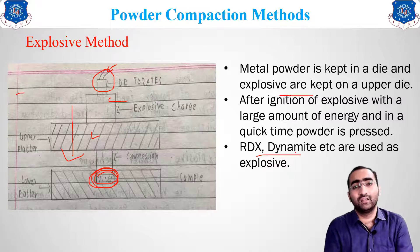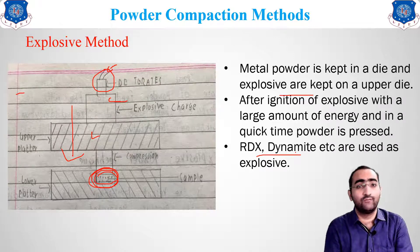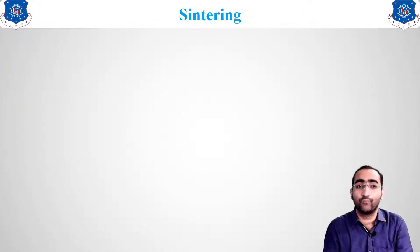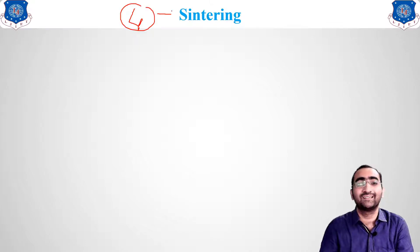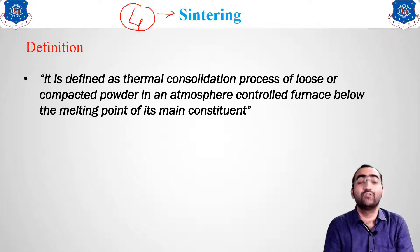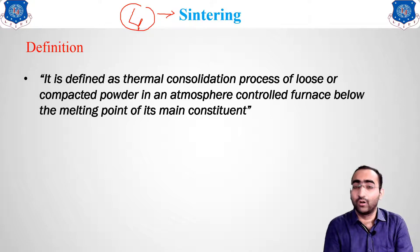That concludes the third step — powder compression. To recap: we generated powder, then did mixing and blending, then gave it shape through compaction. Now we move to the fourth and most important step of powder metallurgy — sintering — because the properties of the material depend on it. Sintering is the thermal consolidation process of loose or compacted powder in an atmosphere-controlled furnace, below the melting point of the material.